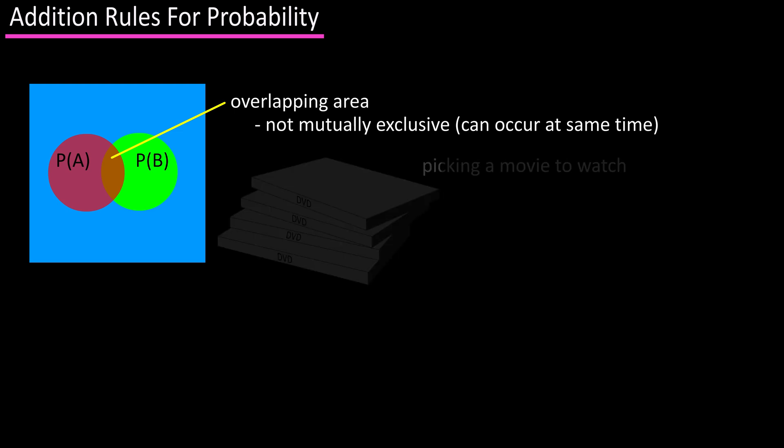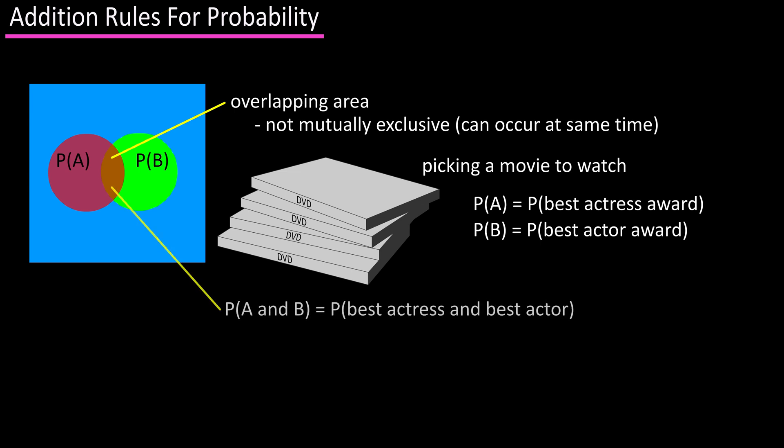For instance, let's say that you're picking a movie to watch from your personal collection. Probability of A could represent a movie that won best actress award. Probability of B could represent a movie that won best actor award. The overlapping area of probability A and B would represent a movie that won both best actress and best actor awards, and the rest of the area would be a movie that did not win either of these awards.